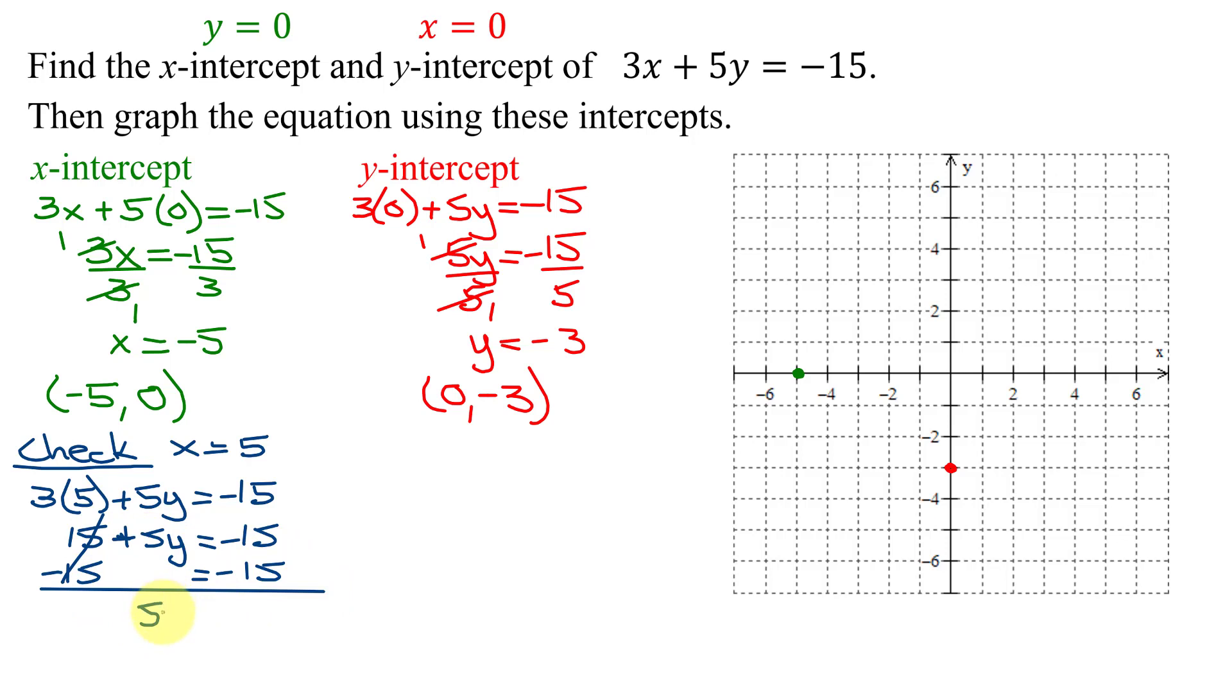I get 5y equals negative 15, added to negative 15 is negative 30. Divide both sides by 5, and that is going to give me, once I've reduced the 5s, y equals negative 30 divided by 5 is negative 6.